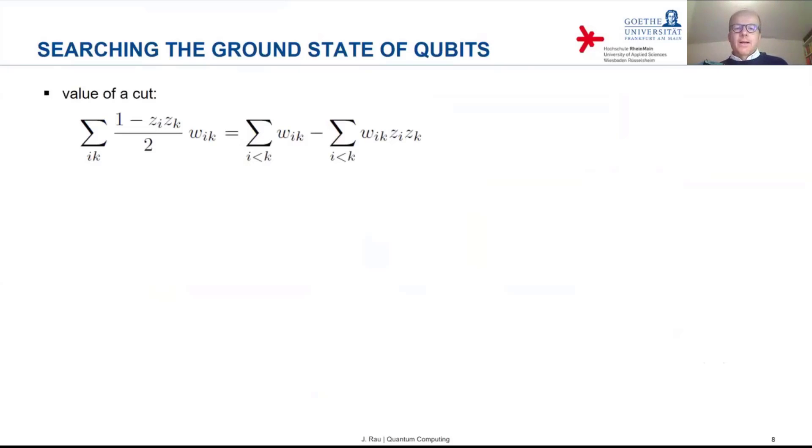Now, maximizing the value of the cut is equivalent to minimizing the second sum. Because when we vary the cut, what we do is we change the two subsets of the nodes. So we change the assignment of values to the variables z_i. So we really only need to consider the term which depends on the variable z. This is the second sum.